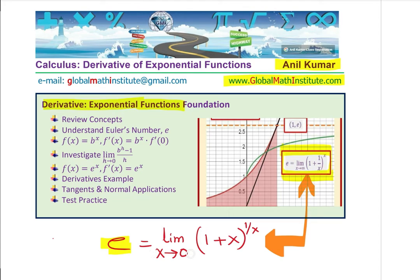So, we will consider when x approaches 0, 1 plus x to the power of 1 over x. Now, you can very clearly see, if I substitute 0 here, then what do I get? I get 1 plus 0 to the power of 1 over 0.